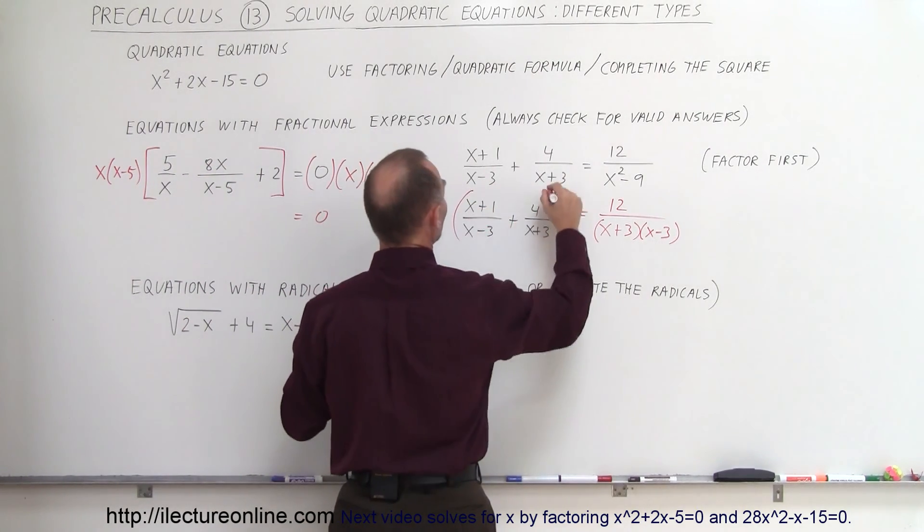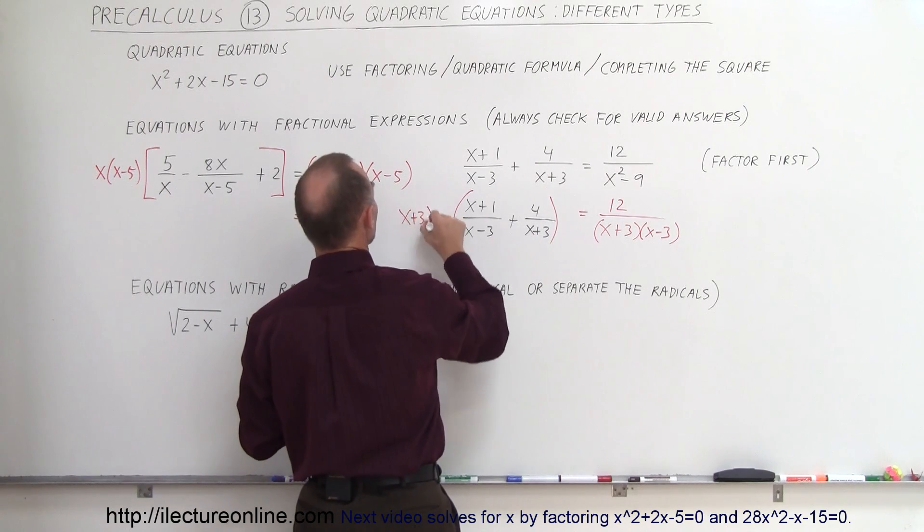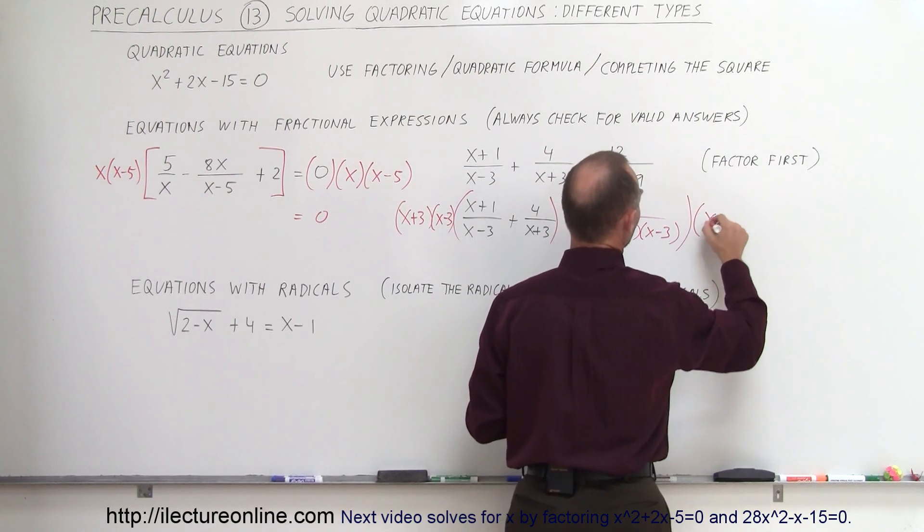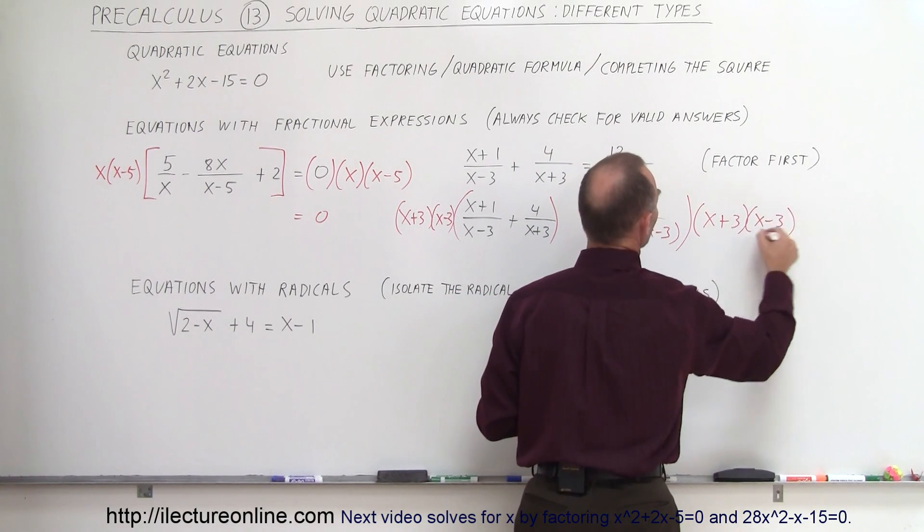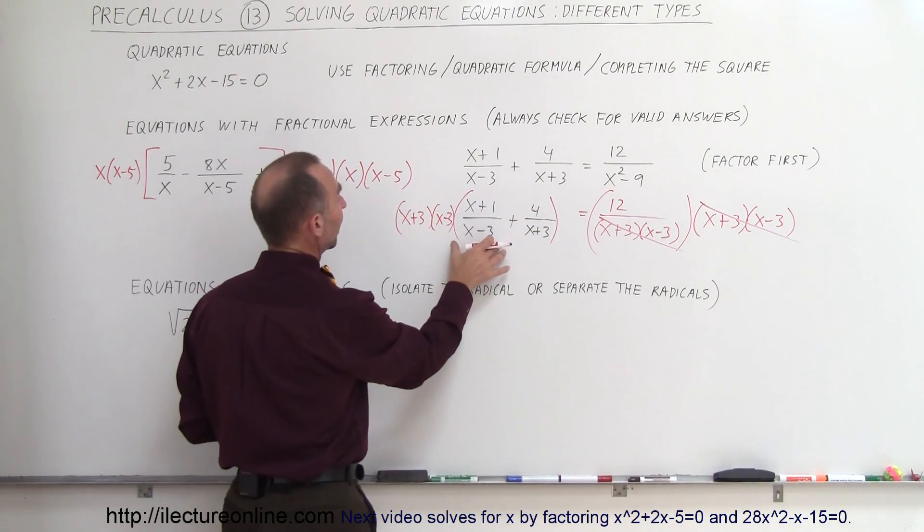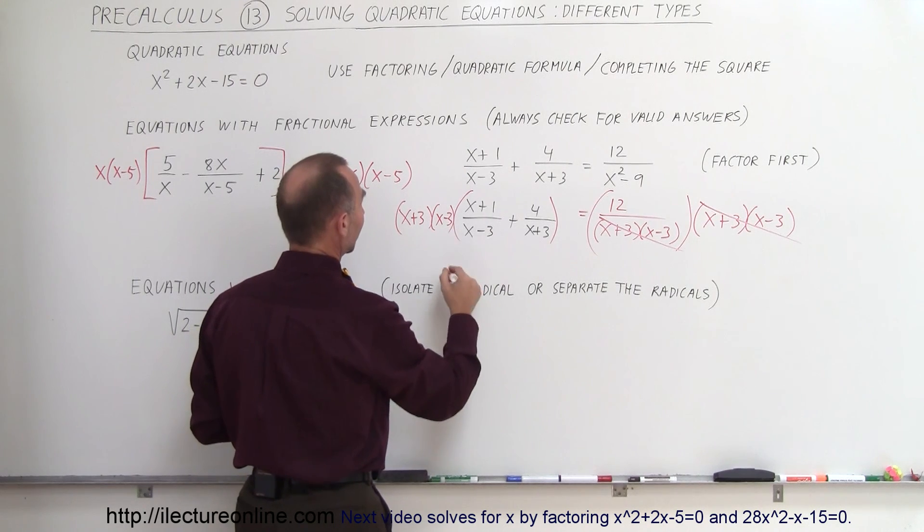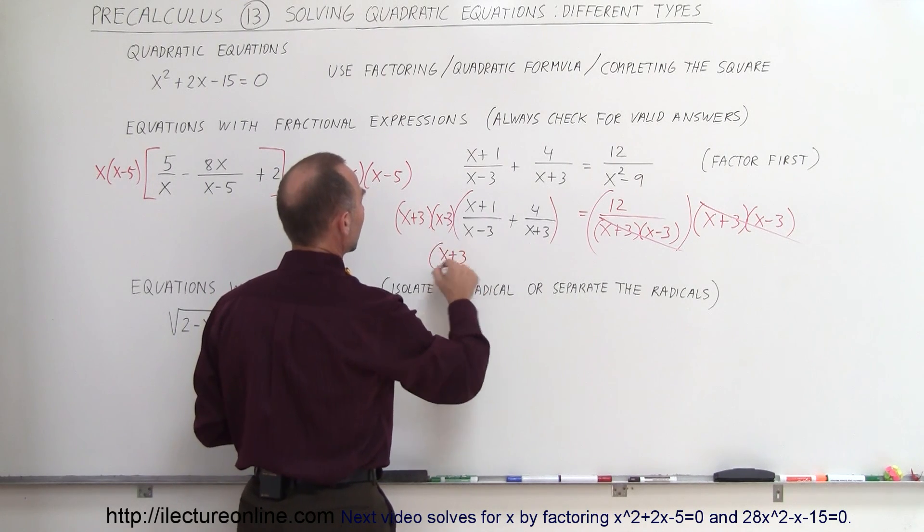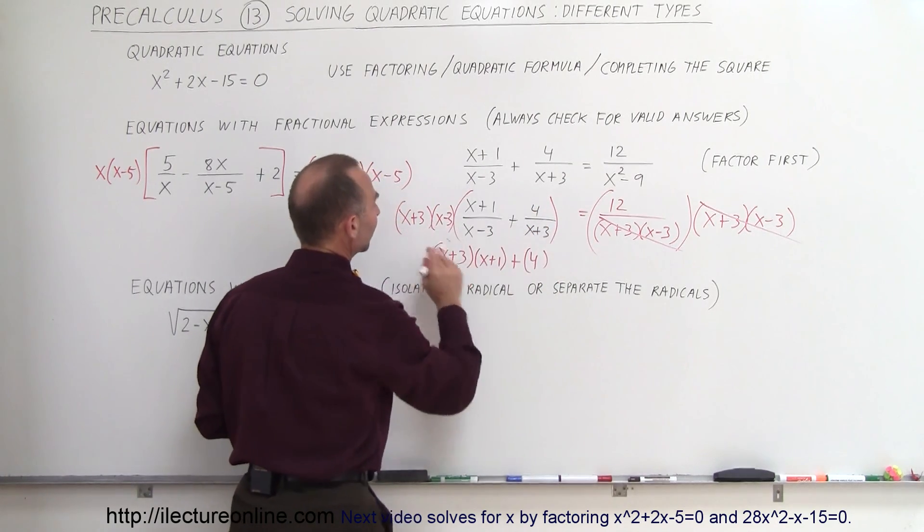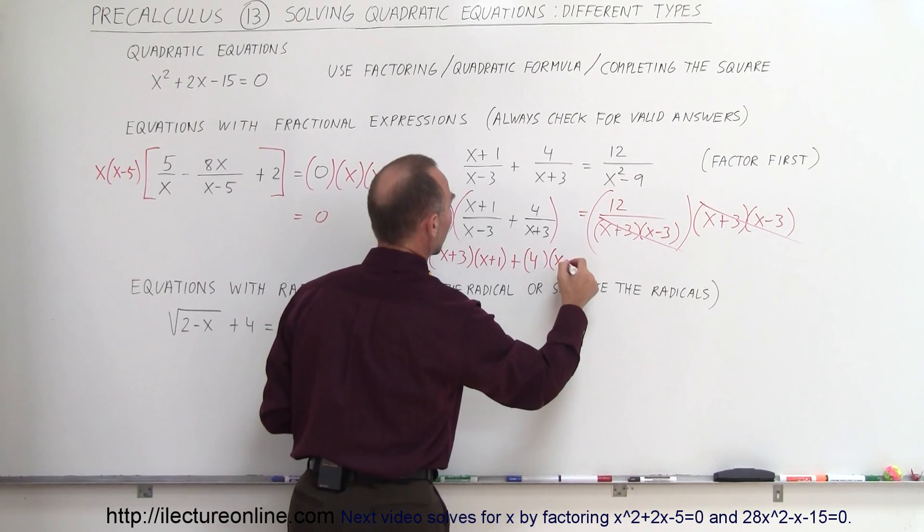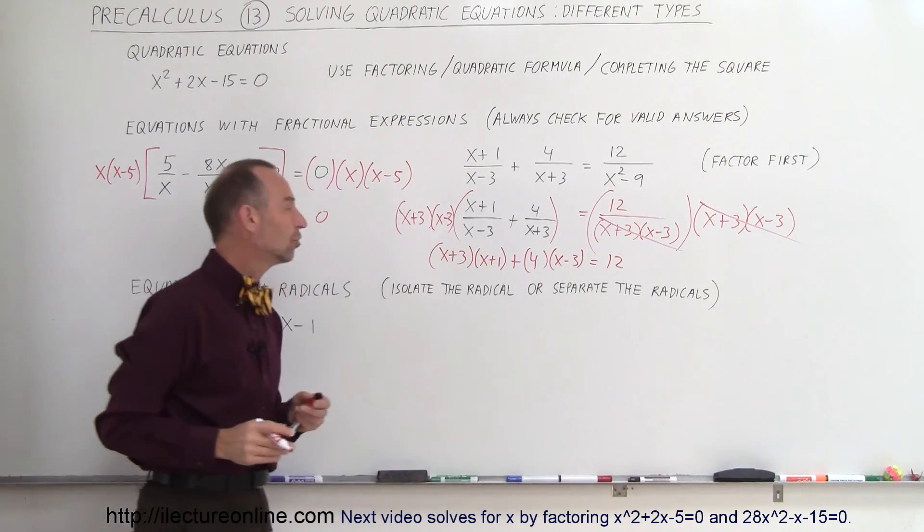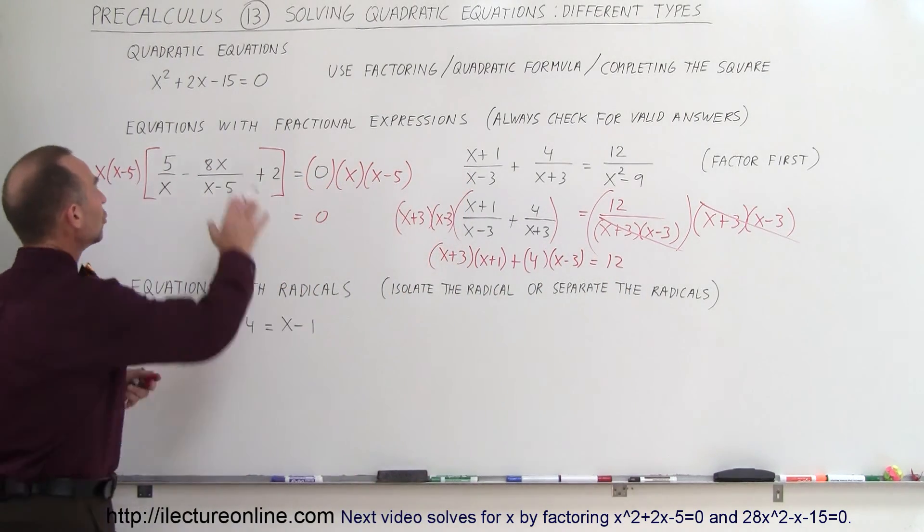So in this case, you want to multiply the left side by x plus 3 times x minus 3. And here, the right side, same thing, x plus 3 times x minus 3. Of course, this cancels out this. On the right side, you end up with 12. And when you do this, notice that on the first case, the x minus 3's cancel out. So you end up with x plus 3 times x plus 1 plus 4 times. And in the second case, the x plus 3's cancel out. And here, left with an x minus 3, and that equals 12. And then you go ahead and use the techniques there that you would use in the case like that.